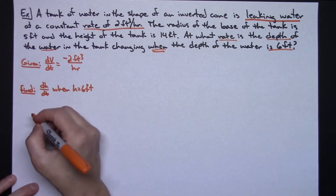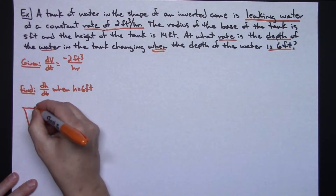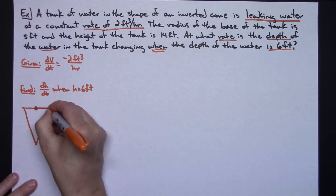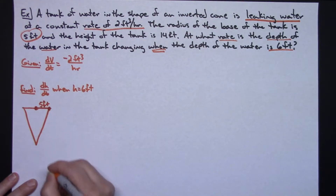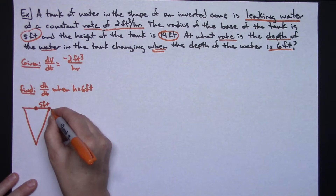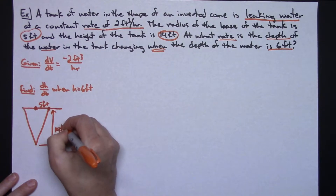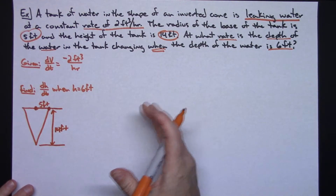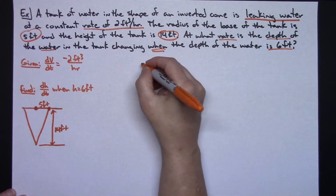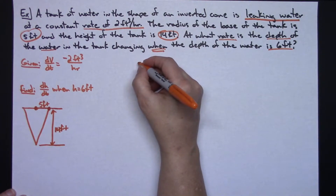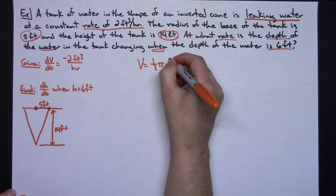Now let's draw our picture — an inverted cone. The radius of that cone is 5 feet and the height of the tank is 14 feet from top all the way down. Since we're dealing with a cone and volume, the formula for the volume of a cone is V equals one-third pi r squared h.